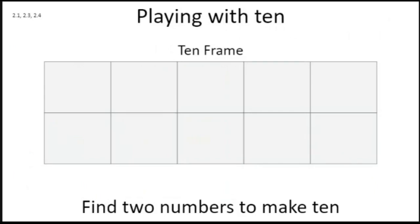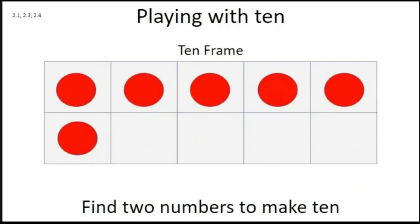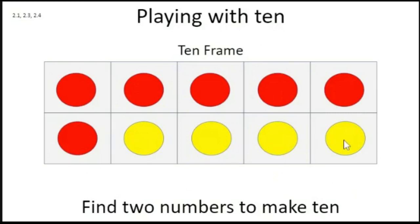Now we are going to play with ten. One, two, three, four, five, six, seven, eight, nine, ten. It's called a ten frame. Let's find two numbers to make ten. Here is the first number — the red circles. One, two, three, four, five, six. And one, two, three, four, five, six. That makes ten.